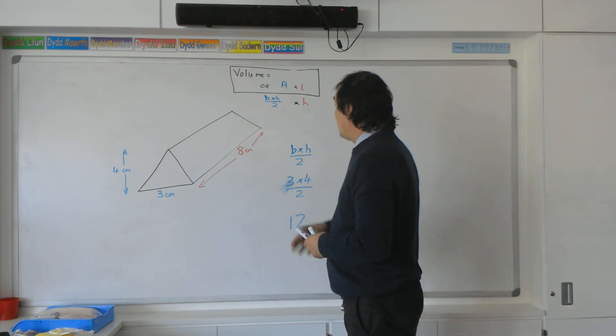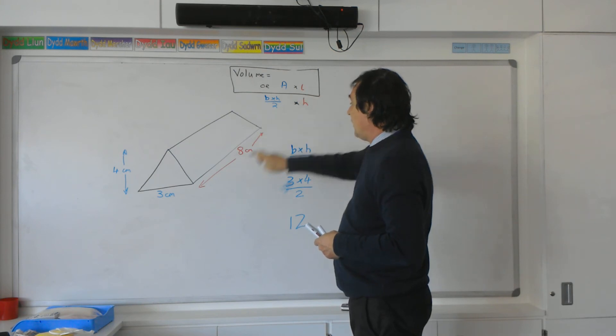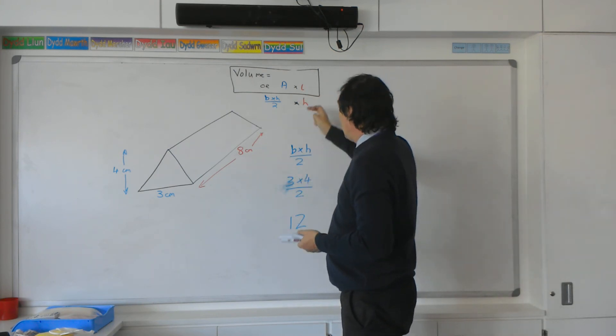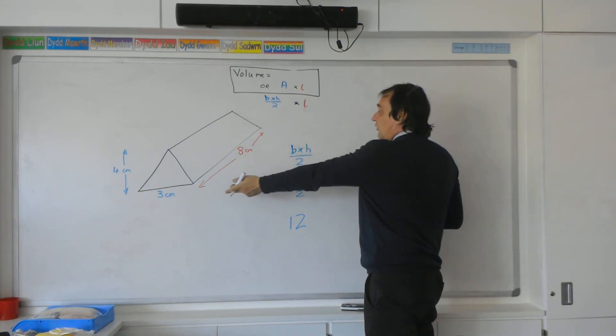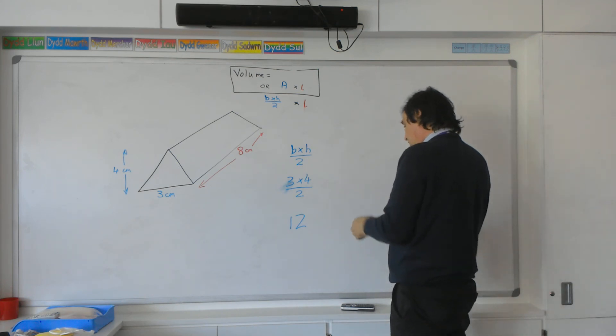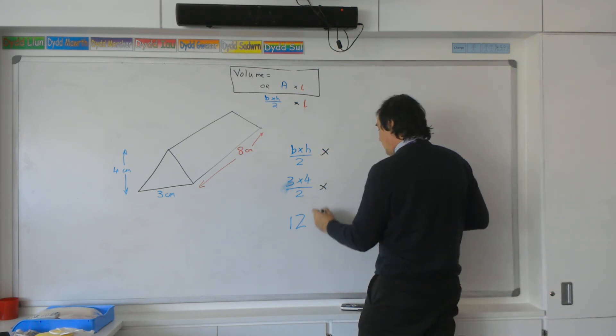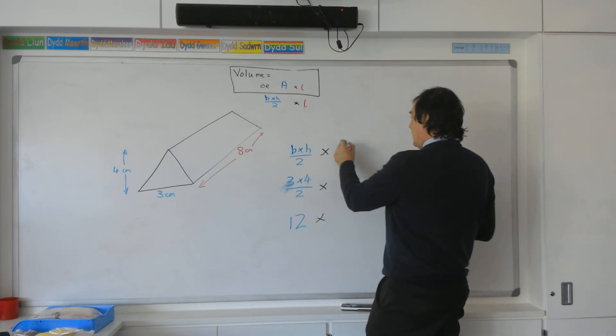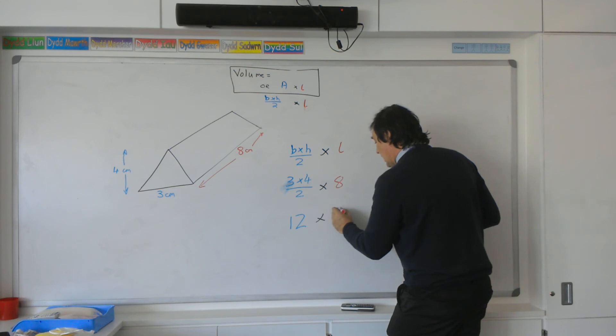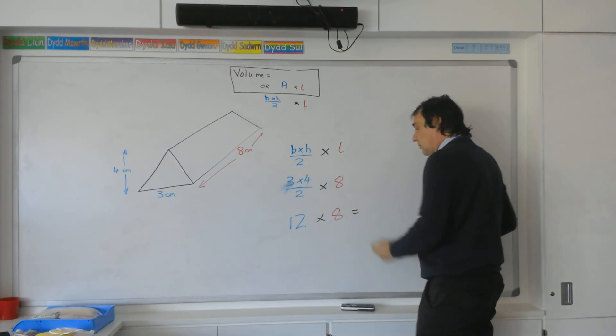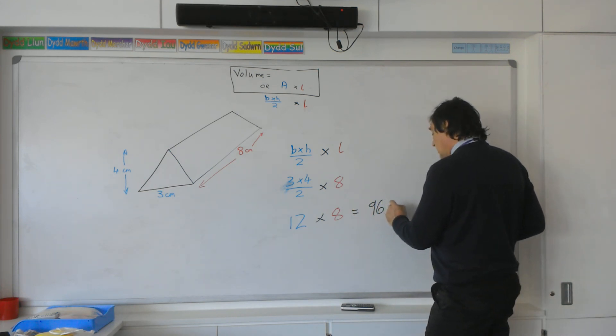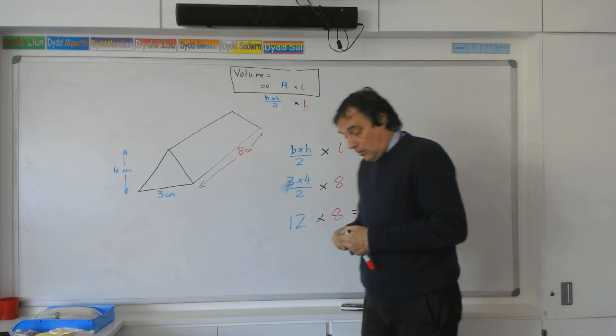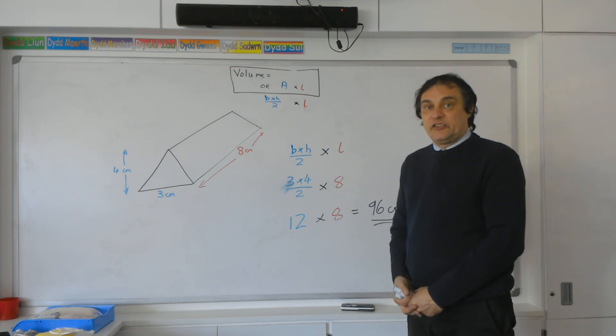To work out the volume of the triangular prism, now we've got our cross-sectional area, we multiply it by the length. Sometimes it uses height, but we'll keep it as length for this question. The area times that length—and the length we've got is eight. So we're left with twelve times eight to work out the volume of this prism. Twelve times eight is ninety-six. As it's a volume, it's centimeters cubed. That is how you work out the volume of a triangular prism.